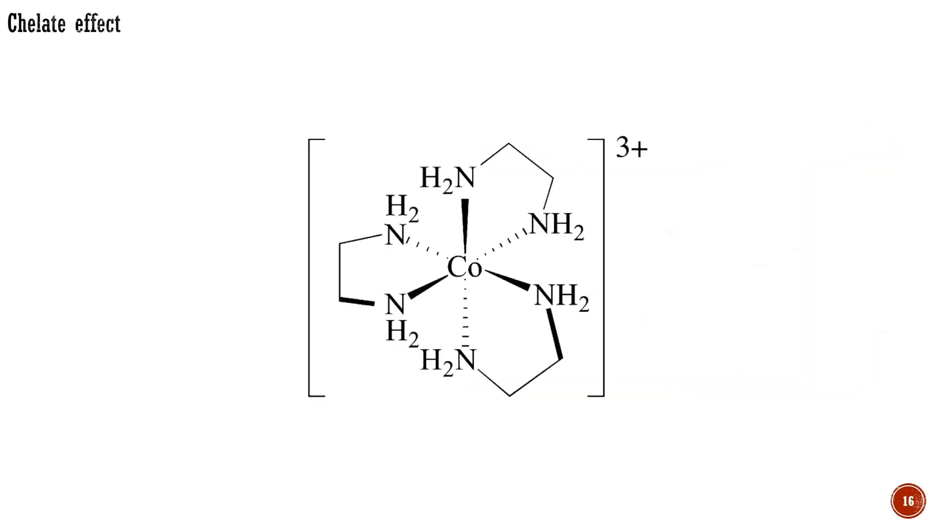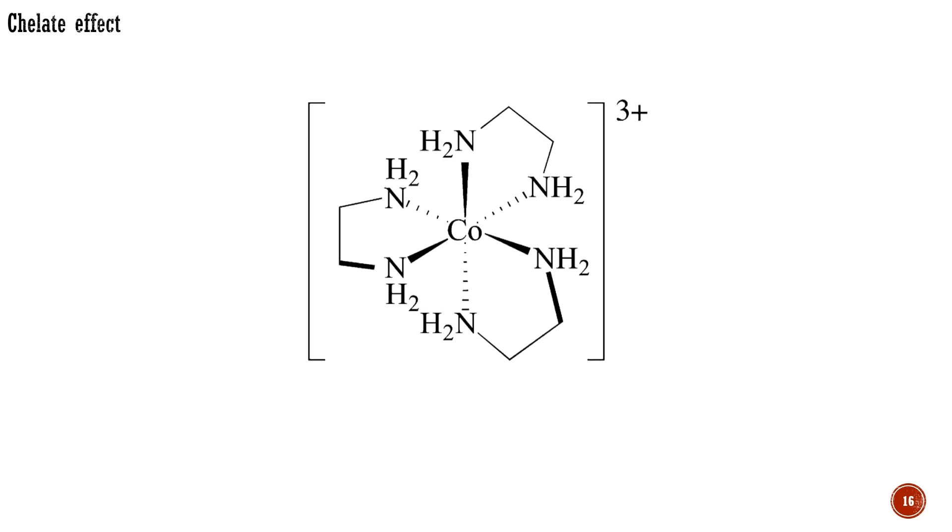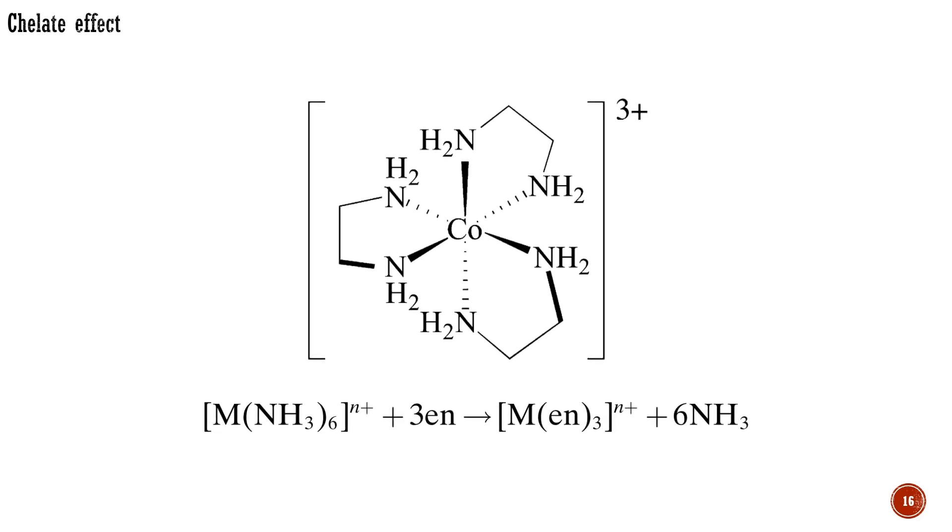Ligands with more than one donor atom, such as ethylenediamine, abbreviated as en, can donate both lone pairs to form a chelate ring. The most favorable ring size is five, but six-membered metallacycles are also often seen. Chelating ligands are much less easily displaced from a complex than are comparable monodentate ligands for the reason illustrated in this equation.